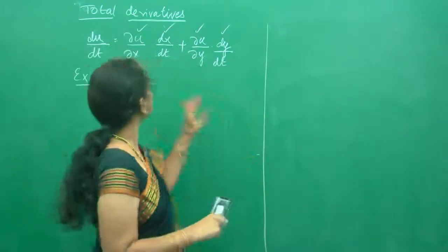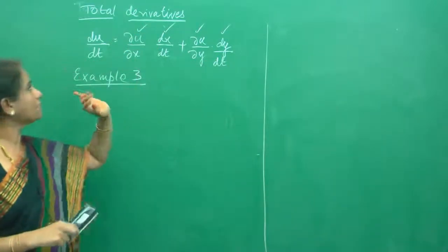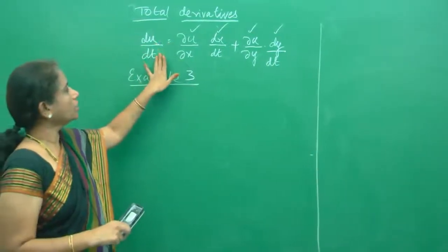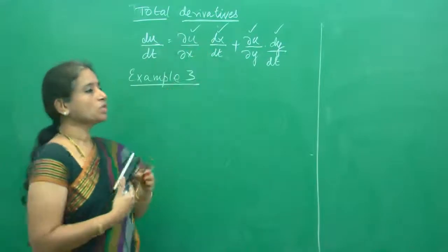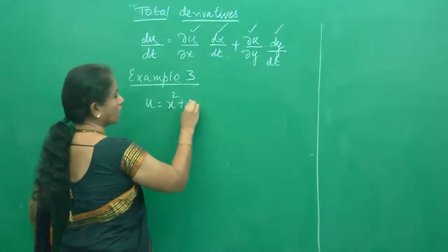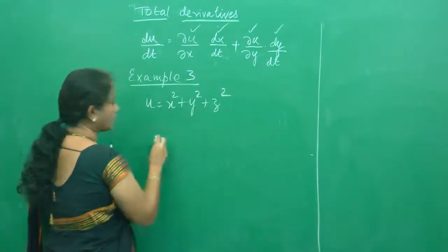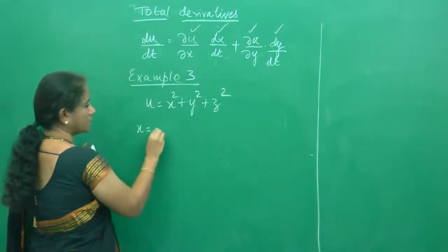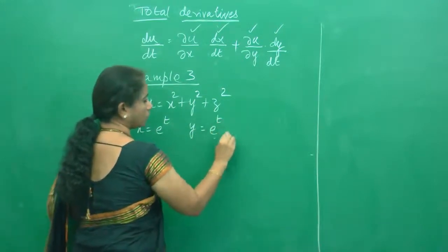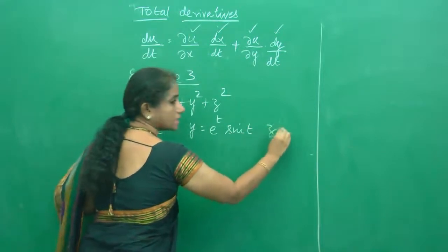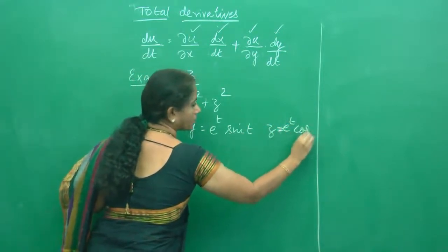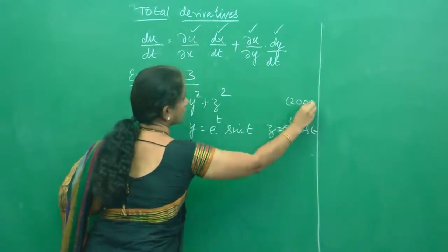Hello everybody. In this class we are going to do one more example for total derivative, and you already know du by dt is given by this formula. So now we are going to solve: you are given u is equal to x square plus y square plus z square, and x is equal to e to the power of t, y is equal to e to the power of t sin t, and z is equal to e to the power of t cos t. This has come in Hanna University 2001.